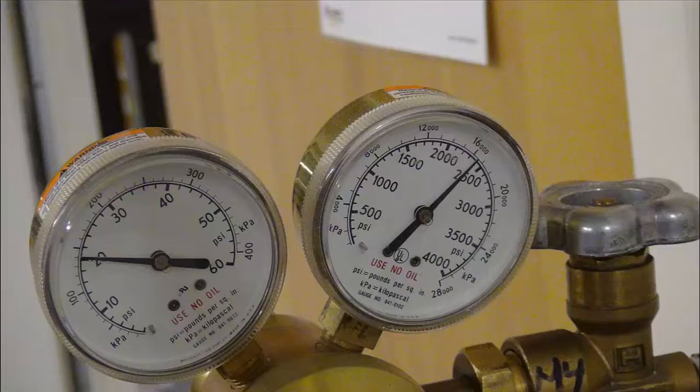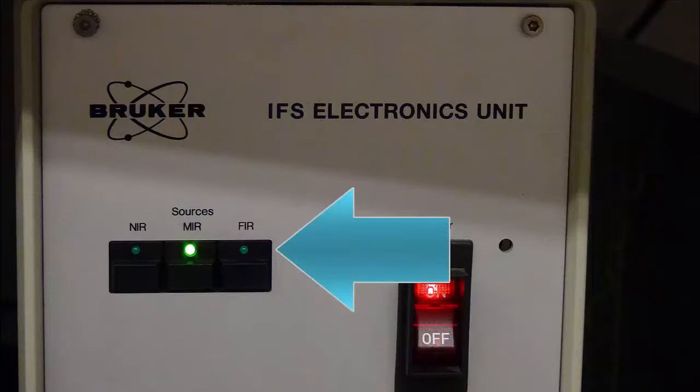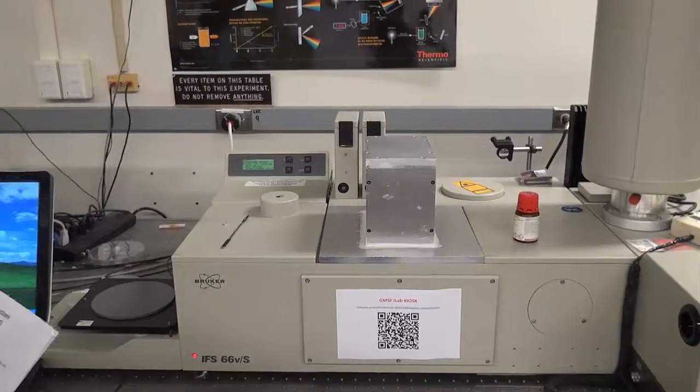You need to check the nitrogen cylinder to make sure it's not empty. You need to check that the correct source is installed and on. You can do this by looking at the box underneath the table. You need to check that the correct beam splitter is installed.